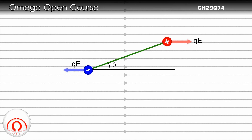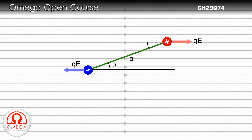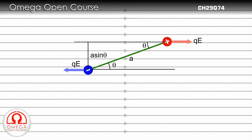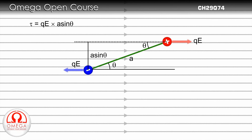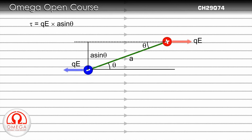Since the rod makes an angle theta with the electric field, the distance of the line of action of the force on the positive charge from the clamp is A sin theta. Therefore, the torque due to this force about the other end is Q times E times A sin theta. For a small angle, sin theta equals theta, so the torque is QE times A theta.